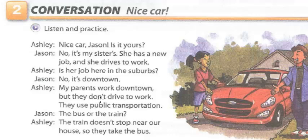Y aquí vemos el uso de la palabra don't y doesn't. Doesn't se usa con los pronombres he, she o it. Por ejemplo, the train es una cosa, es it — the train doesn't stop. Aquí no para, o no hace una parada. Y don't lo usamos con I, you, we, and they. They don't drive — Ellos no conducen. They drive — Ellos conducen. They don't drive — Ellos no conducen. Negación en presente.